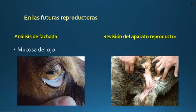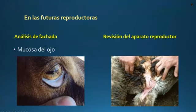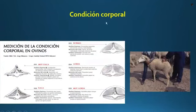También es importante hacer el análisis de fachada, que mide la mucosa del ojo. Este análisis es importante porque nos permite darnos cuenta si el animal está enfermo o si está siendo afectado por algún tipo de parásito. La mucosa del ojo generalmente debe ser algo rosada, no puede ser blanca. La revisión del aparato reproductor también es esencial: la vulva debe estar conformada siempre con sus dos labios con buena apariencia, no debe estar ni pelotuda ni con lesiones ni decolorada si no está en celo. Debe estar con toda su apariencia normal, lo cual es un buen indicador del estado del aparato reproductor de la hembra.